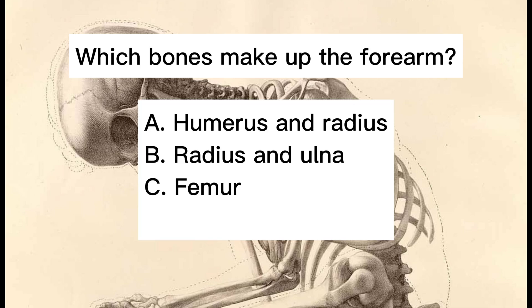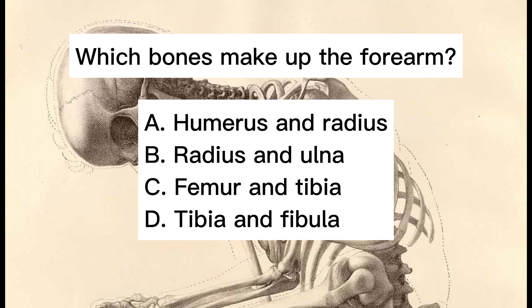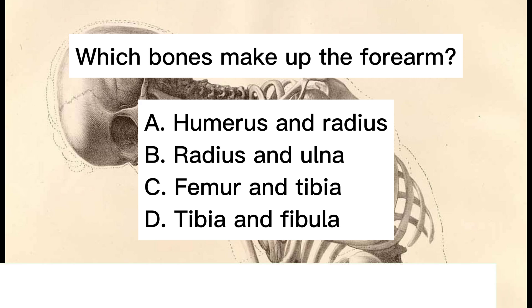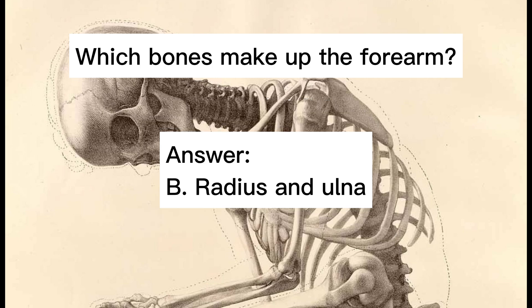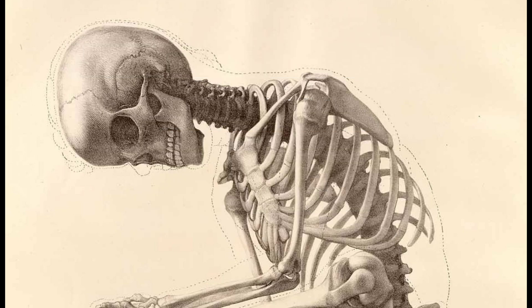Which bones make up the forearm? A. Humerus and radius. B. Radius and ulna. C. Femur and tibia. D. Tibia and fibula. Answer: B. Radius and ulna.